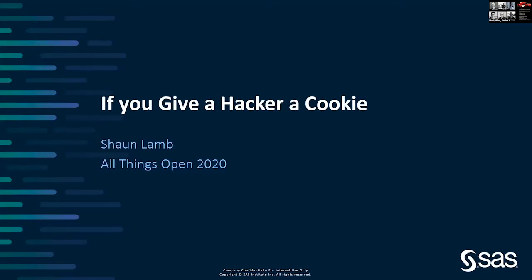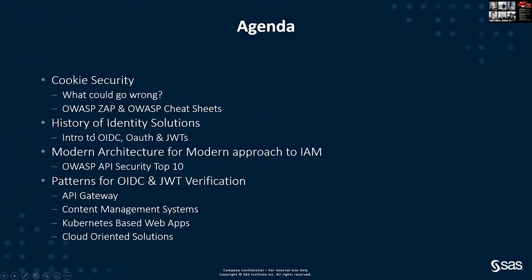Today I'm going to talk about authentication, authorization, and web applications. There's a pretty broad spectrum of topics — not just security, though this is the security track. I'll also talk about identity management, show some code, and cover comparisons of application architecture. This is meant to be an introductory talk, so I'll start with the basics about cookie security and application vulnerabilities as they relate to cookies, authentication, and authorization. I'll also talk about some open source projects like OWASP's ZAP and some of the cheat sheets.